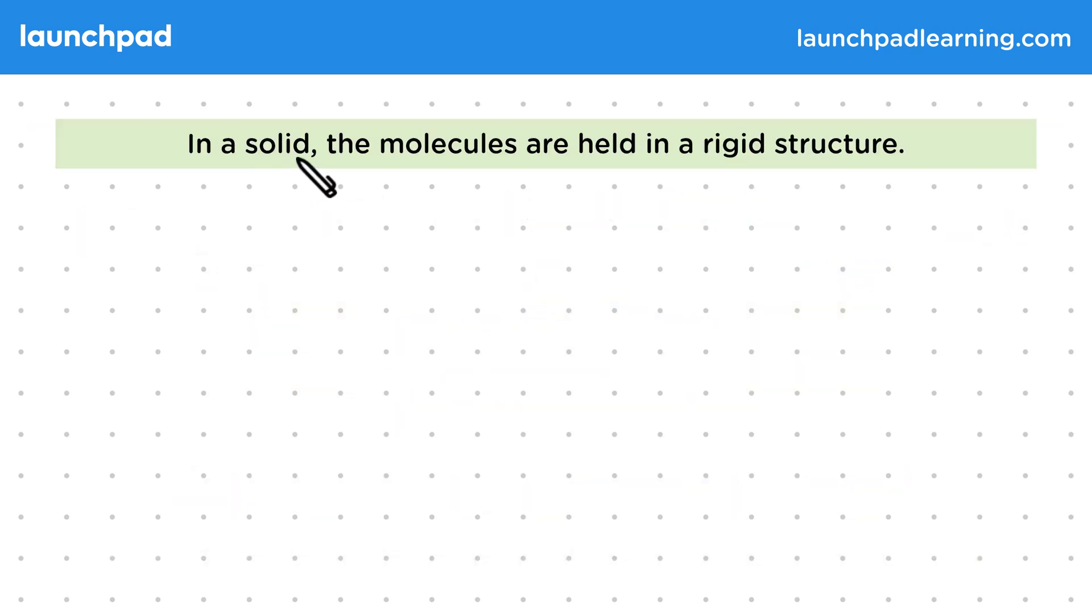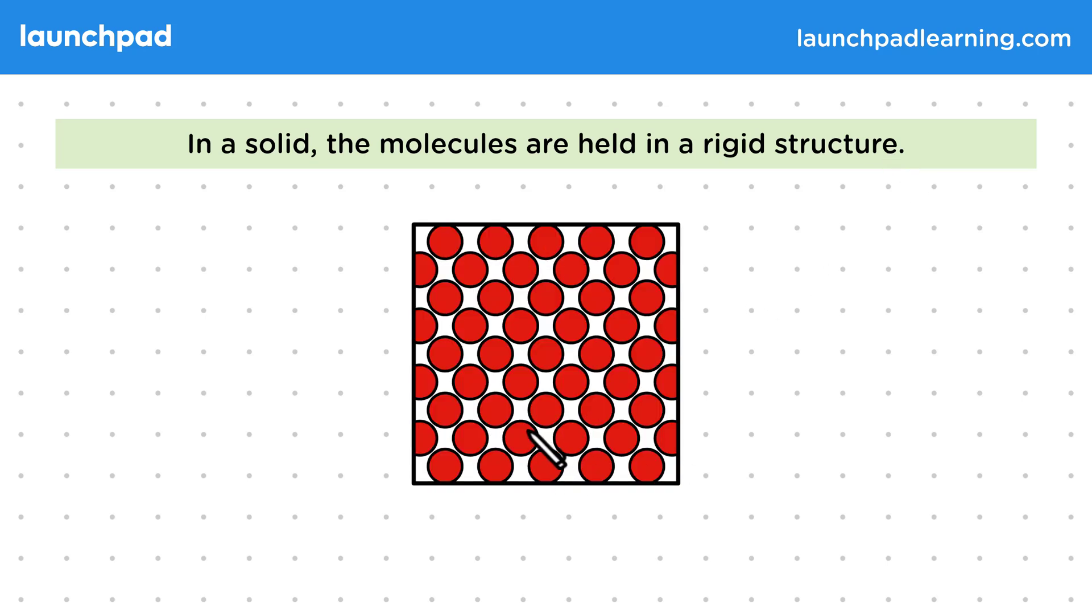Let's look at each state and understand the potential energy and intermolecular bonds we'd find. So first, in a solid, the molecules are held in a rigid structure. Remember that the structure of a solid would be something like this, where the molecules are held in place and can only vibrate rather than move.